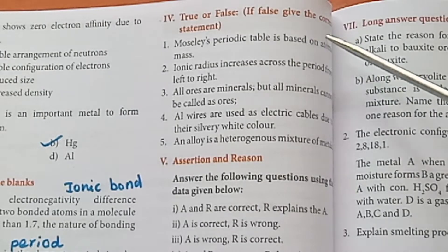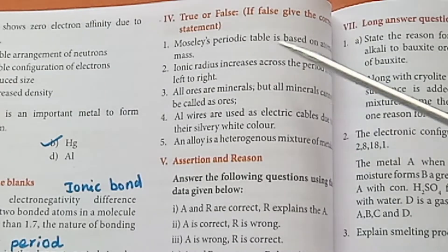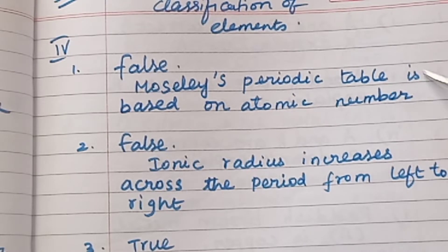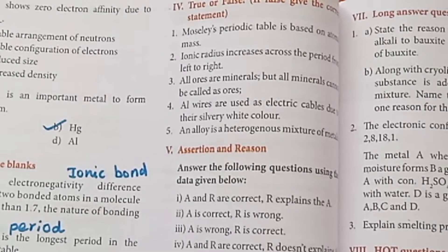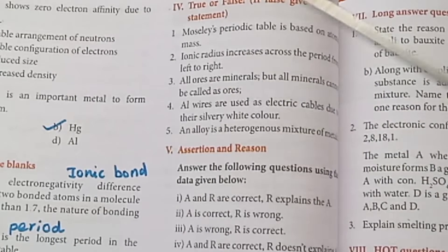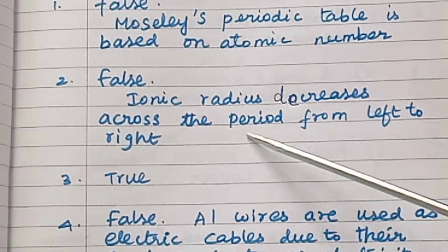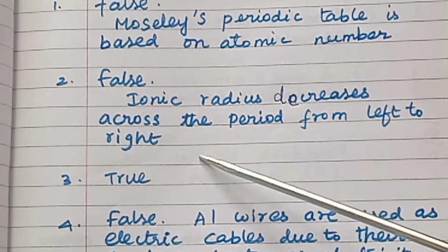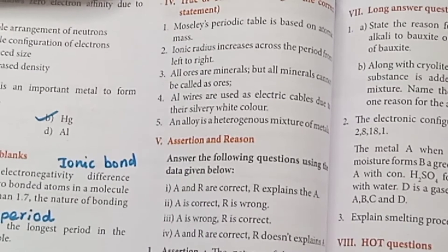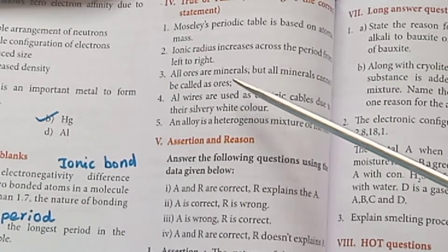True or False. Statement 1: Moseley's periodic table is based on atomic mass — False. Correct statement: Moseley's periodic table is based on atomic number. Statement 2: Ionic radius increases across the period from left to right — False. Correct statement: Ionic radius decreases across the period from left to right. Statement 3: All ores are minerals, but all minerals cannot be called as ores — True.